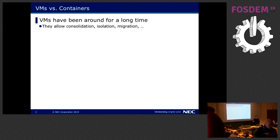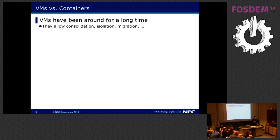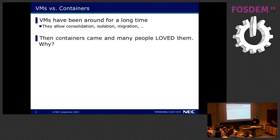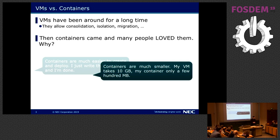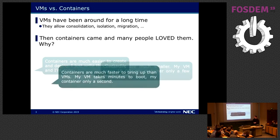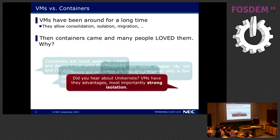You're probably aware that VMs have been around for a while, and they were really good in features like consolidation, migration, and isolation. Then the hype of containers happened — they became much more popular and people use them now. Containers are easier to use with a Dockerfile, much smaller than VMs (100 megabytes vs 10 gigabytes), and faster to bring up. But wait — did you hear about unikernels? VMs still have advantages you don't necessarily get from containers, and most importantly: strong isolation.